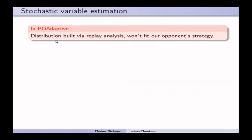In PO Adaptive, we built the distribution between heavy, light, and range units via replay analysis. And the major problem with that is that our replays will certainly not fit the current strategy of our opponent right now in the game.